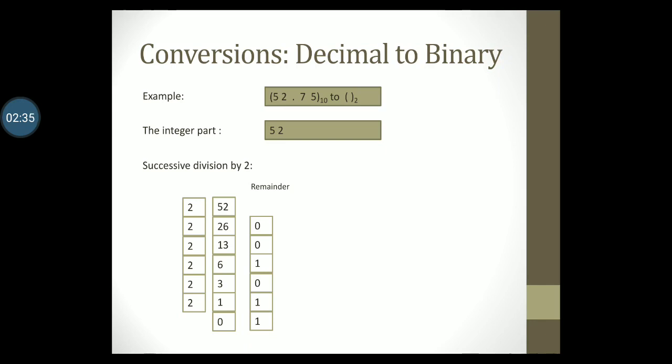Since the quotient now reads as 0, the process has stopped. Next we read the remainders from bottom to top to record the result as 110100.